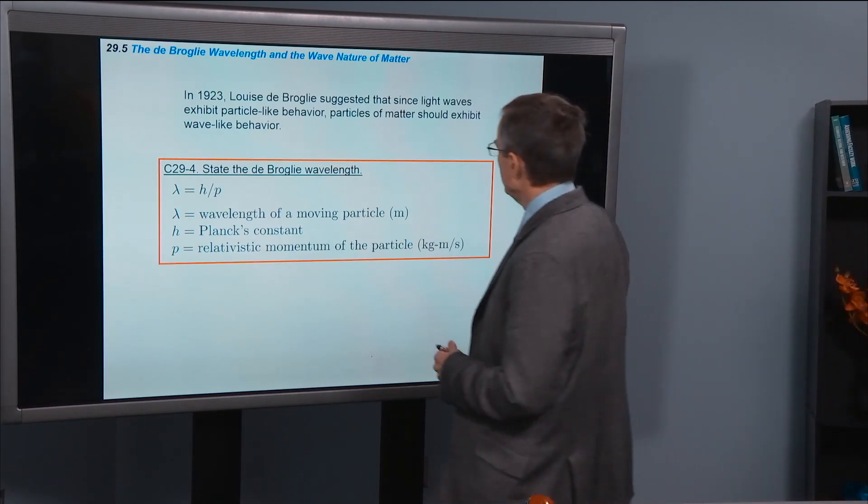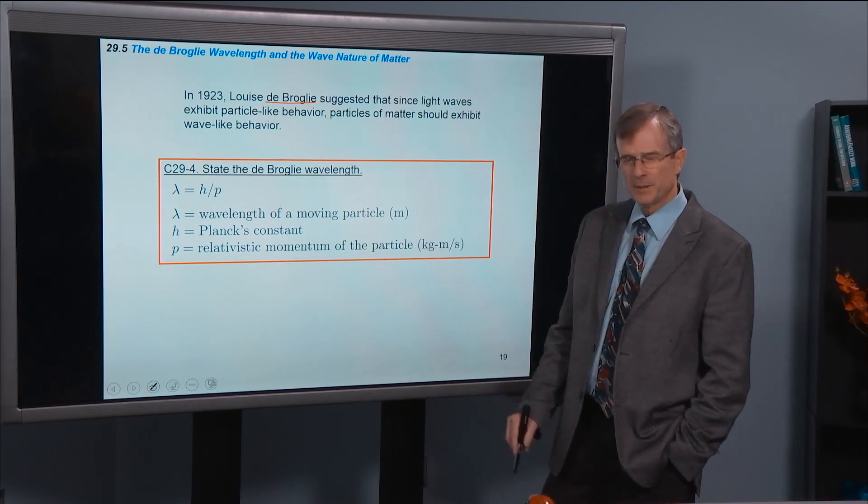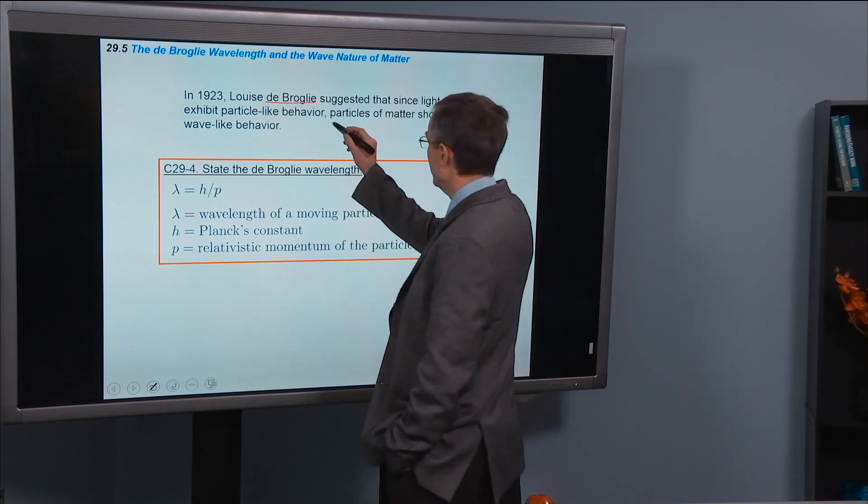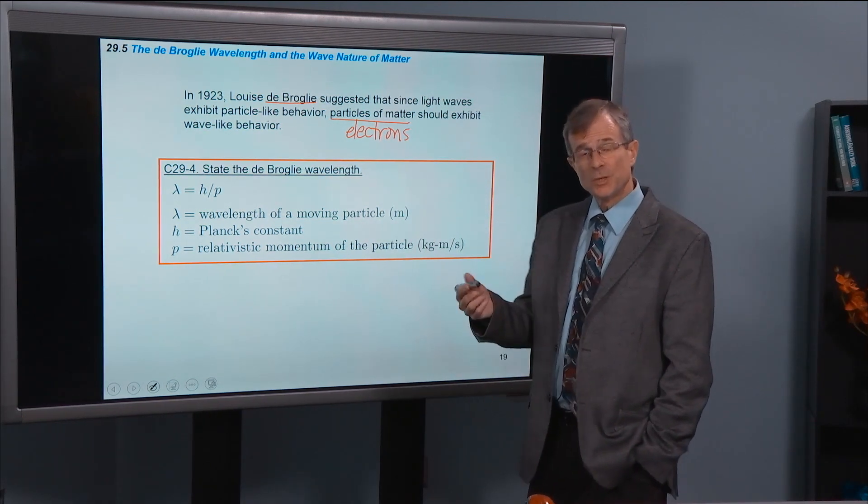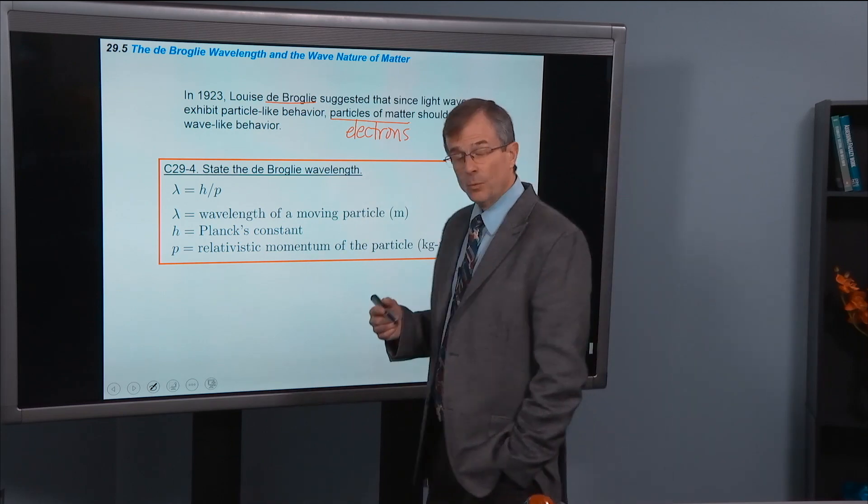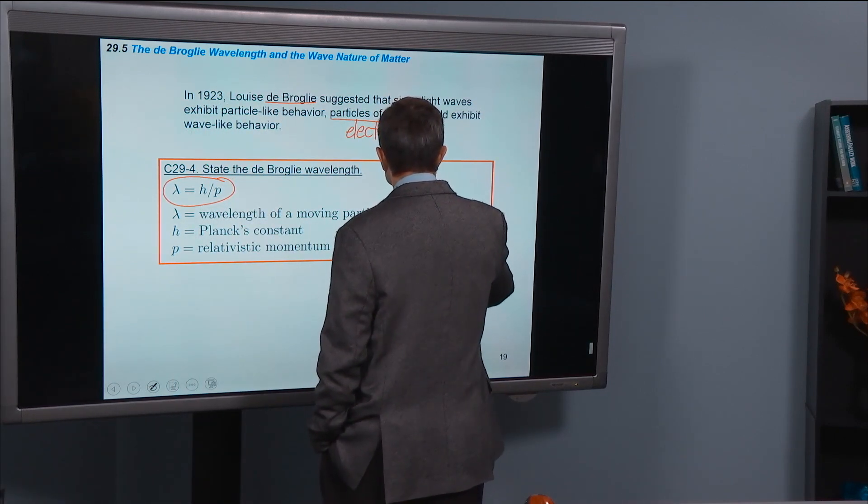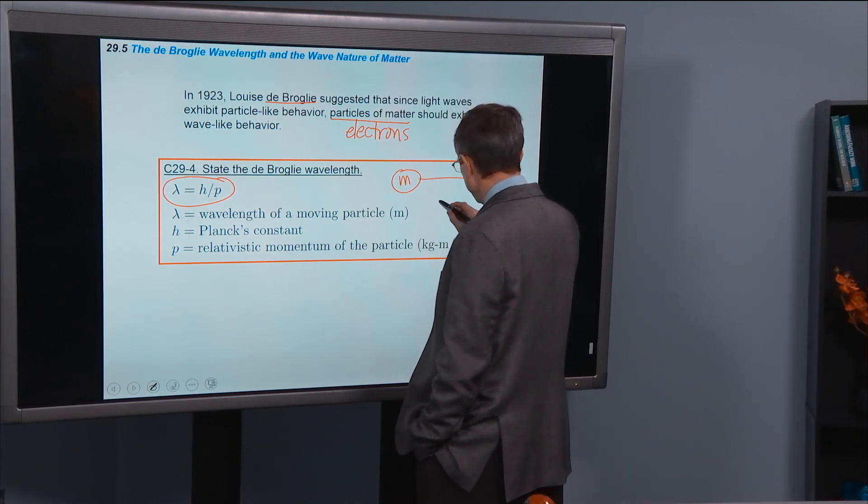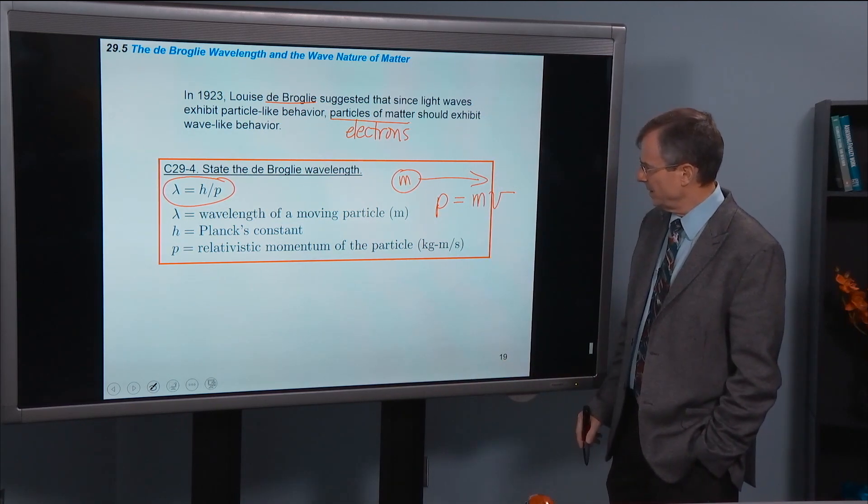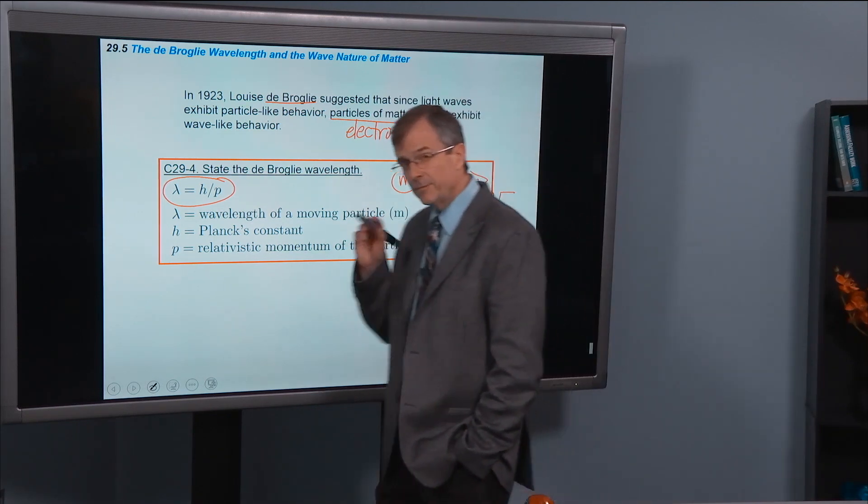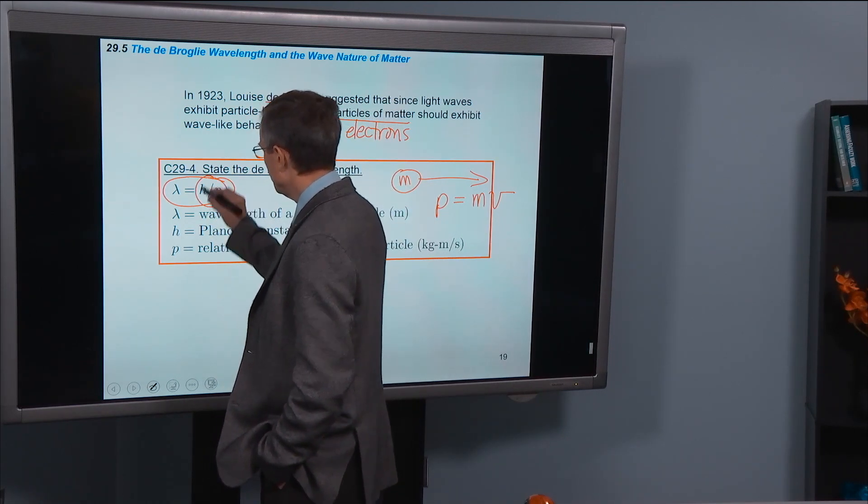In 1923, de Broglie suggested that since light waves exhibit particle-like behavior, particles of matter, like electrons, protons, whatever, should exhibit wave-like behavior. And the wavelength of a particle that's moving, so we're talking about a particle of mass M, that's moving with momentum P, which for non-relativistic particle would be M times V, the momentum of that particle, that the wavelength that that particle has as it moves is given by H over P.